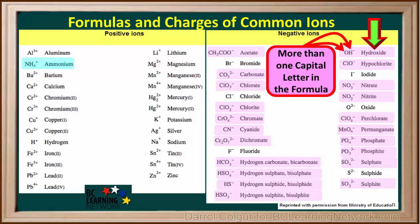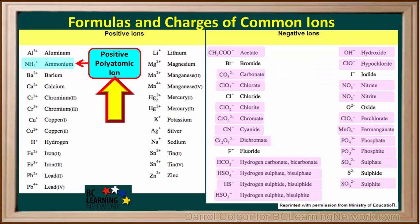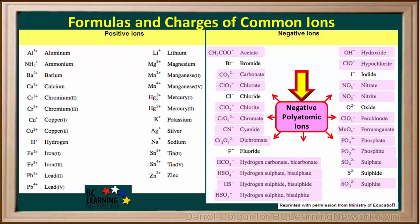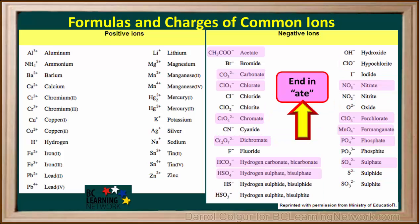You will always be able to use a table like this when you are writing formulas or names for ionic compounds. The only positive polyatomic ion we'll be using is ammonium with the formula NH4+. All of the negative polyatomic ions are shaded in pink — you can see there are quite a few of these. If you look at the names, you can see that many of them end in -ate, like acetate, carbonate, and nitrate.